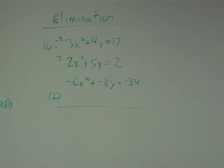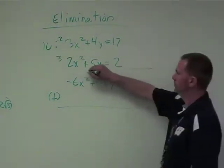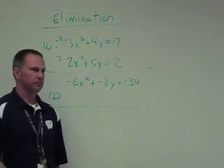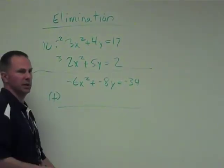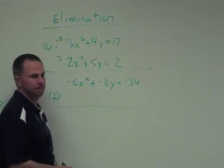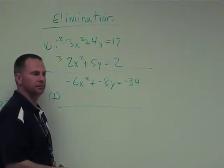Multiply the top equation by negative 2. Multiply the bottom equation by positive 3. The third one is the top one multiplied by negative 2. Multiply the bottom one, and then I want you to finish it.